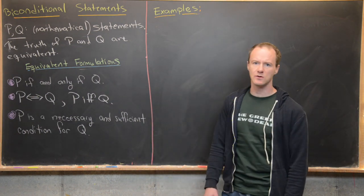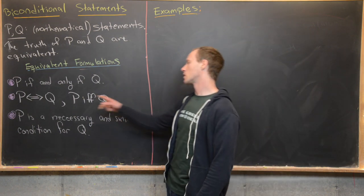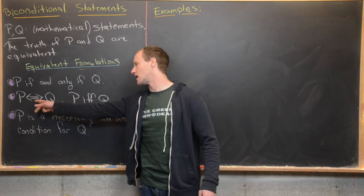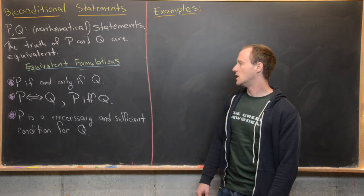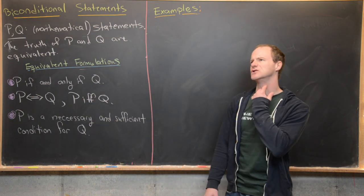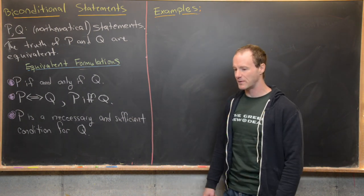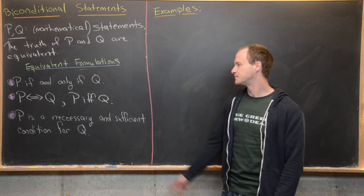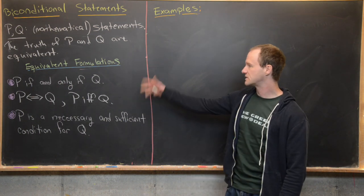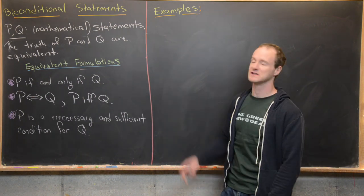Here are some equivalent formulations: 'P if and only if Q' is the standard textbook form; a double arrow is the symbolic version; 'P iff Q' uses the shorthand for if and only if — useful for drafts, but always use complete sentences in a final write-up. Finally, 'P is a necessary and sufficient condition for Q' is another way. This is not exhaustive, but gets you thinking about biconditional formulations.